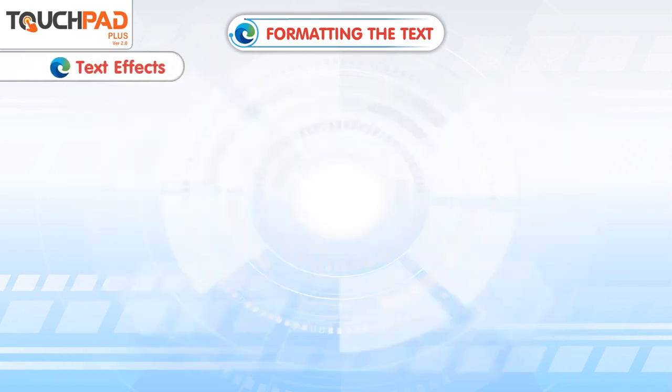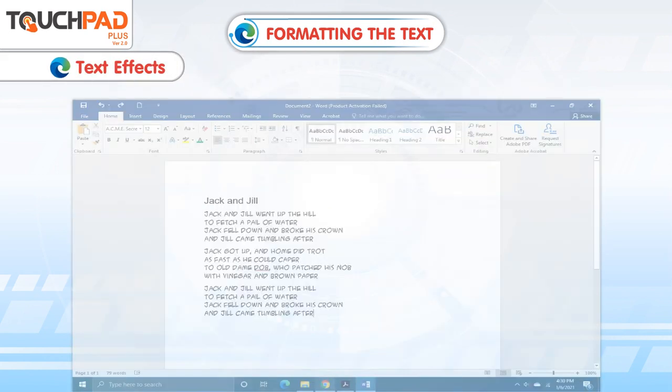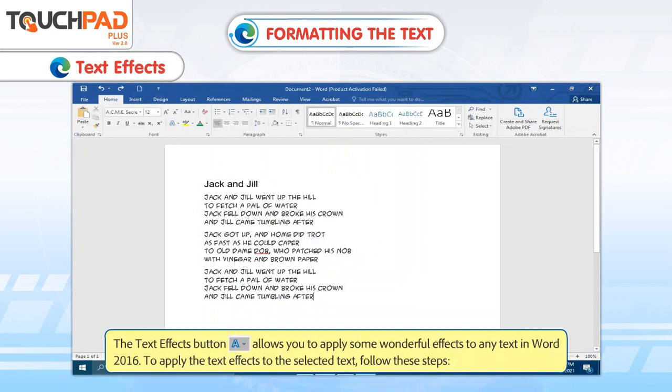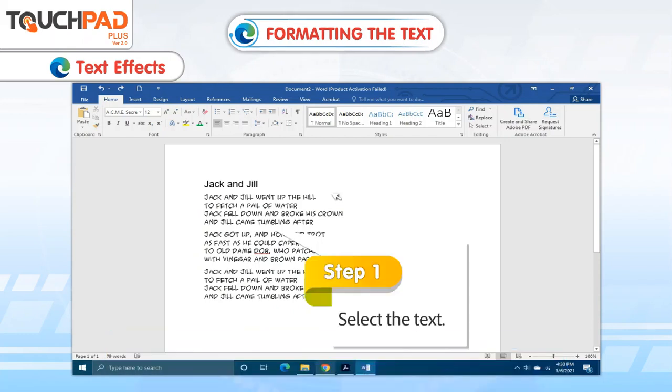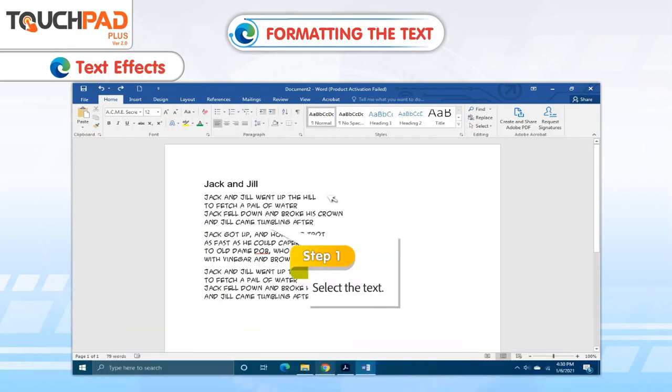Text Effects. The text effects button allows you to apply some wonderful effects to any text in Word 2016. To apply the text effects to the selected text, follow these steps. Step 1. Select the text.